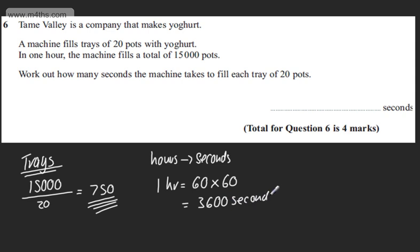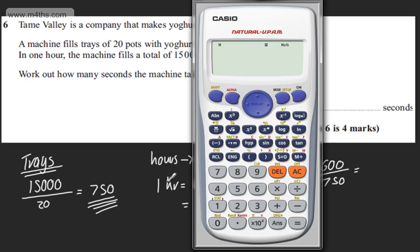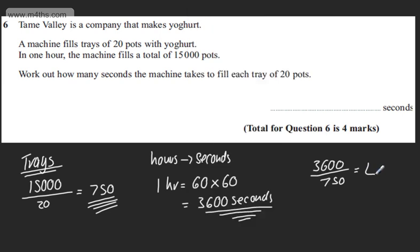So just writing this down. All I'm going to do at this stage is simply take 3,600 and divide it by 750. Put that through a calculator and that will tell me how many seconds the machine takes to fill each tray. So this is one of the many approaches. 3,600 divided by 750 gives me 4.8. So that gives me 4.8 seconds and that now tells me how long it takes to fill each tray.